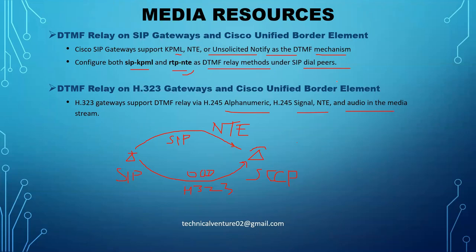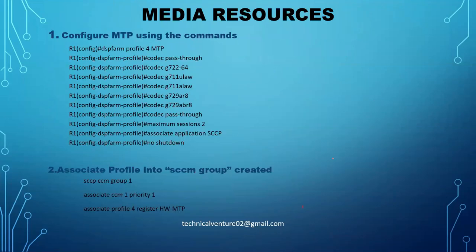Let's discuss the commands used for MTP on gateways. You need to first put the command 'dsp farm profile <number> mtp' on the gateway, where the number is a random profile number and 'mtp' indicates the media resource type you are adding — either MTP, transcoder, or conference, depending on what you want. After entering the command, it will give you 'dsp farm profile codec pass through mode' as a conflict indication.